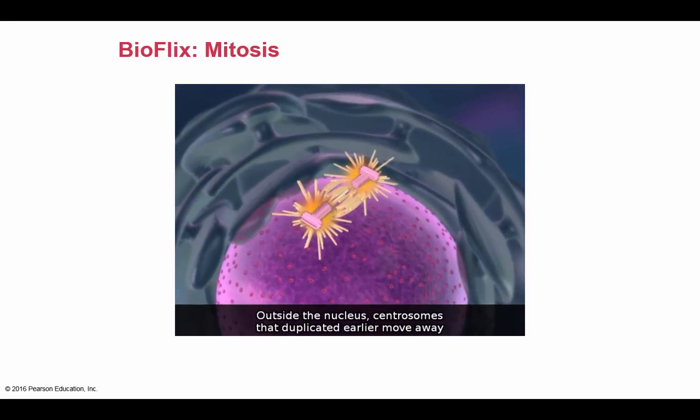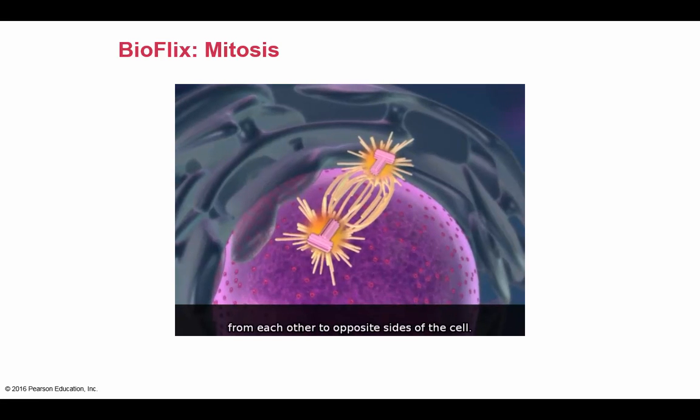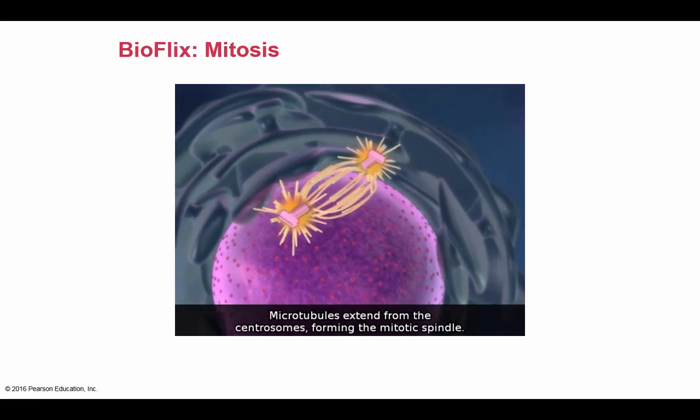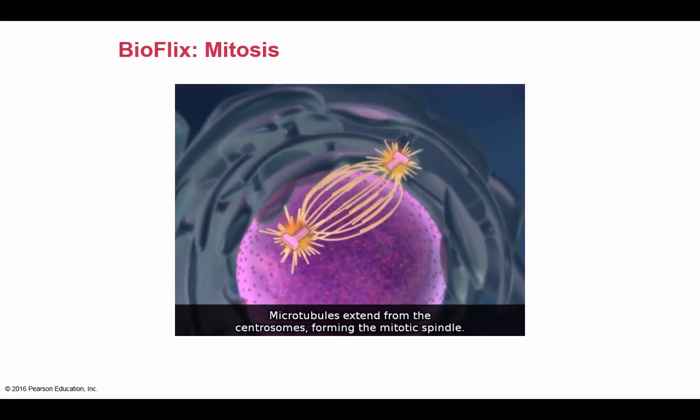Outside the nucleus, centrosomes that duplicated earlier move away from each other to opposite sides of the cell. Microtubules extend from the centrosomes, forming the mitotic spindle.